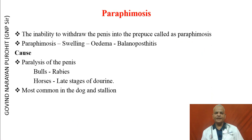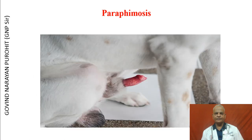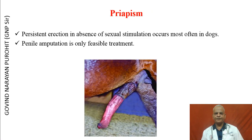Paraphimosis is the inability to withdraw the penis into the prepuce, resulting in swelling, edema, and balanoposthitis. The cause may be paralysis of the penis in bulls, may occur because of rabies in horses, during the last stages of dourine, and is most common in dogs and stallions. Priapism is the persistent erection in absence of sexual stimulation, occurs most commonly in dogs, and penile amputation is a feasible treatment.